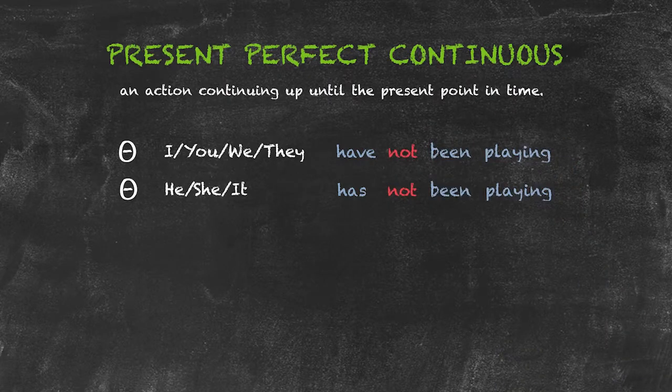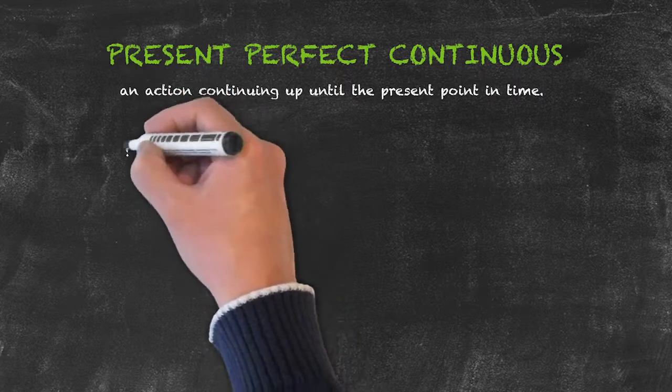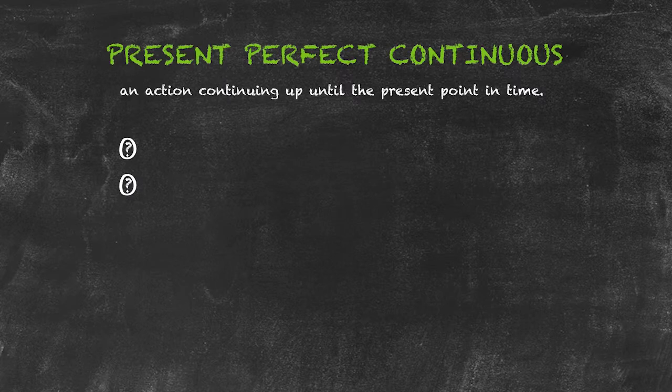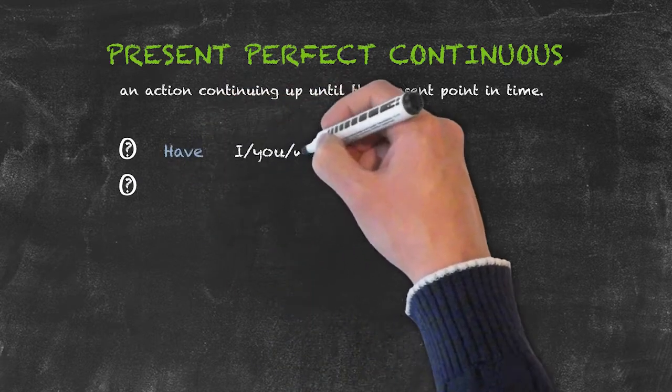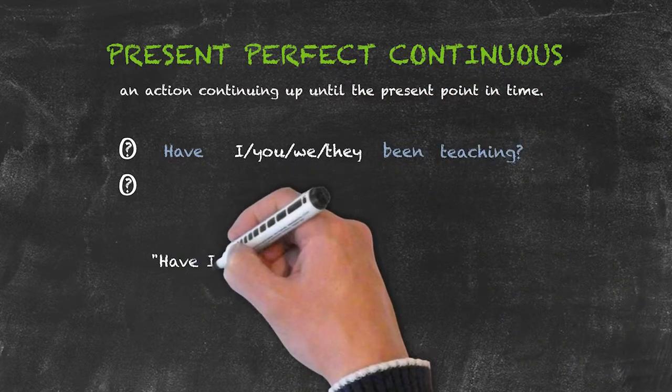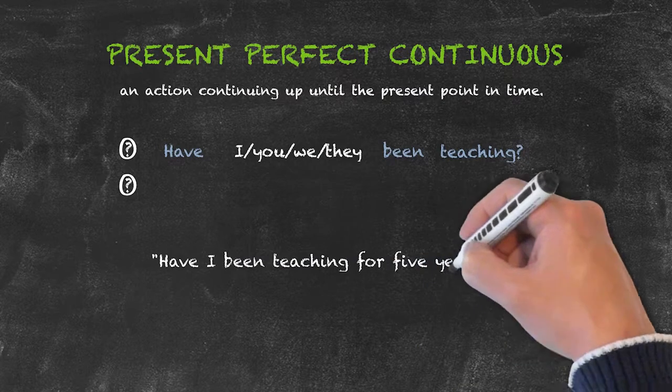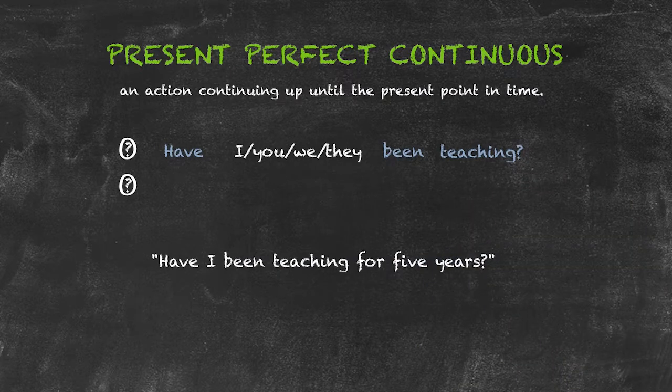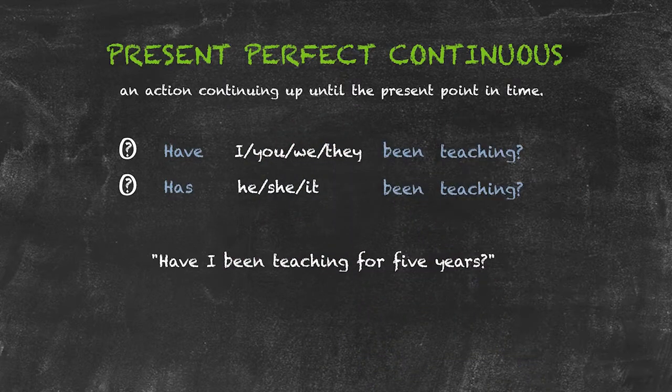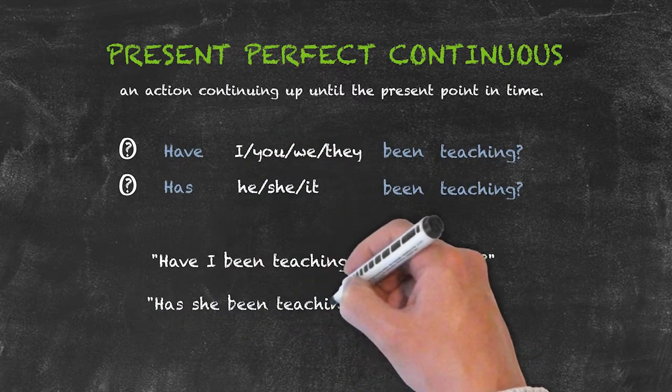In order to make the present perfect continuous questions, again following with that pattern of inversion, what we've done is put the auxiliary verb have at the beginning of the sentence, followed now by the subject. Have I been teaching for five years? It could be a sentence used there. And again we're going to conjugate our verb to has for he, she, it, resulting in has she been teaching for five years?